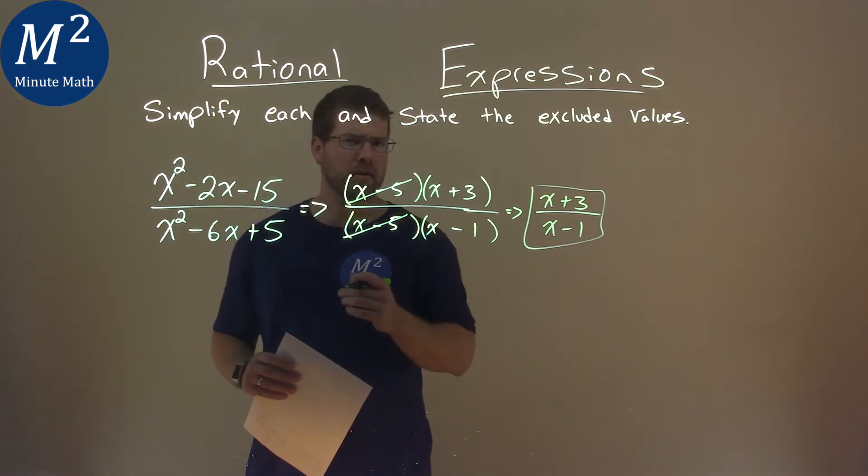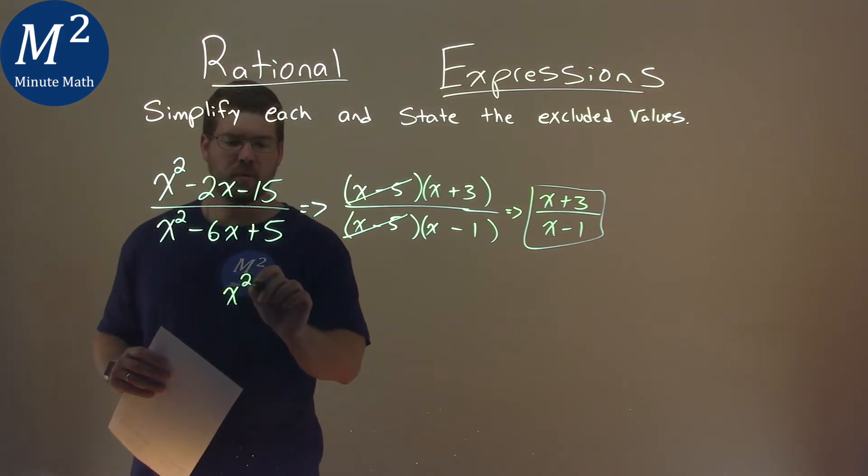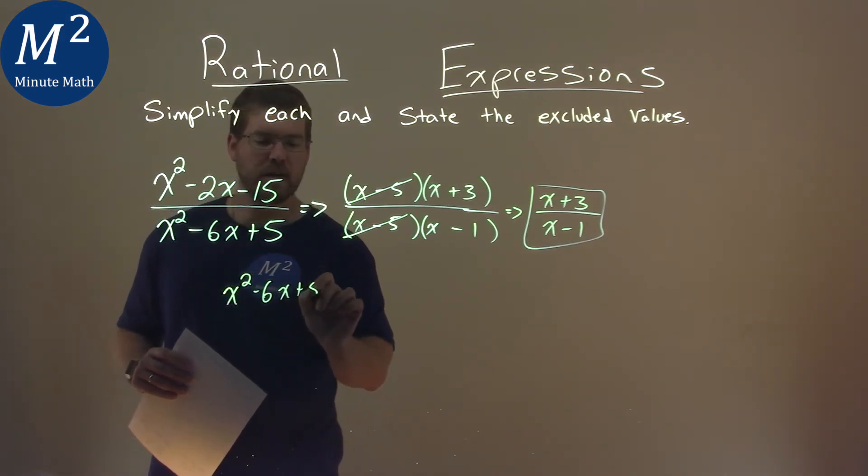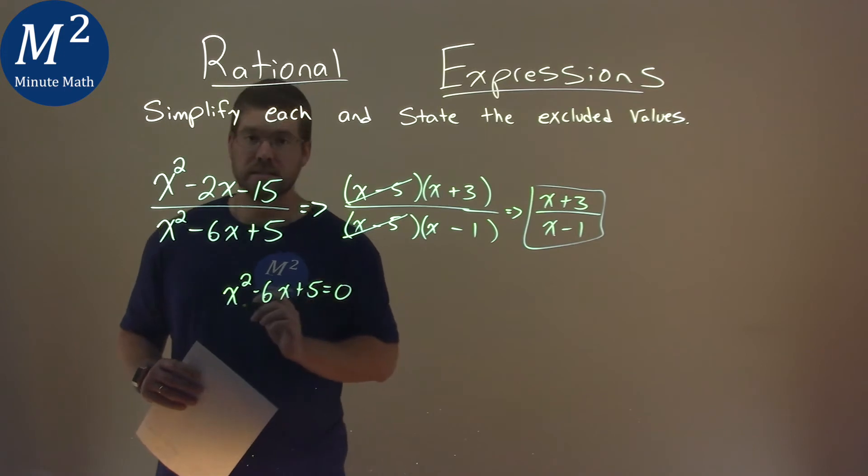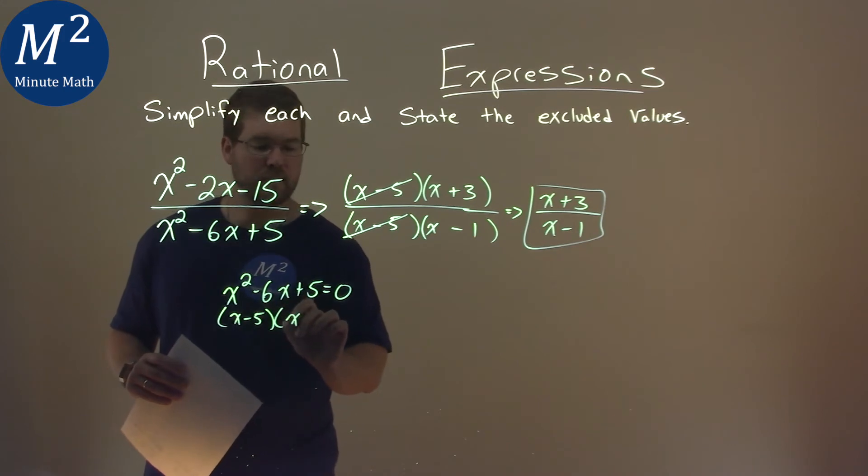But we still have to find our excluded values. So we go back to our original expression and look at the denominator, x squared minus 6x plus 5, and we set this equal to 0. We already know what this is factored: x minus 5 times x minus 1.